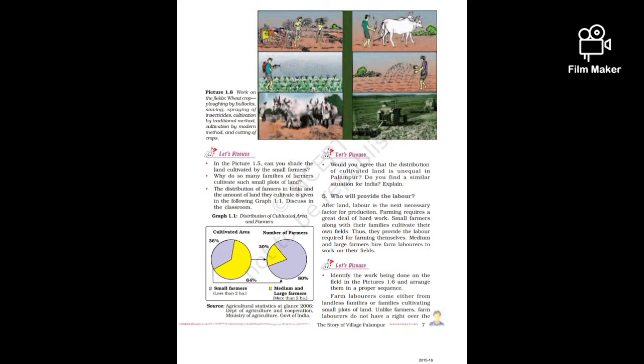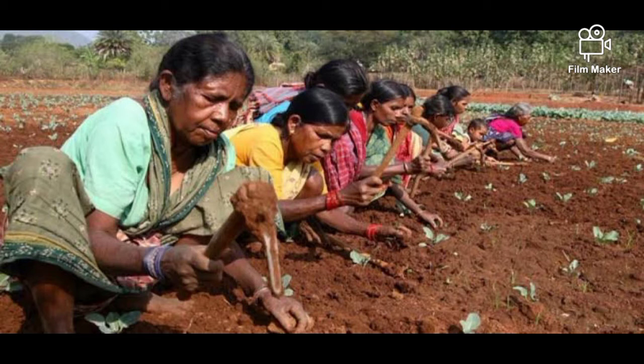Point number four covered the factors of production including land. Now point number five addresses labor as a factor of production. Labor is essential at every production level. In Palampur, Ramo and others are discussed in the context of providing labor, including figures like Mani Ram and Mania Ram.